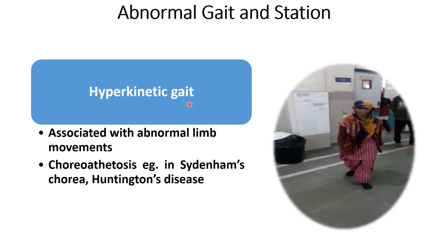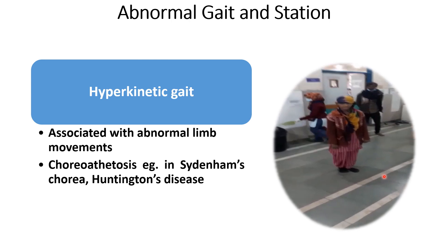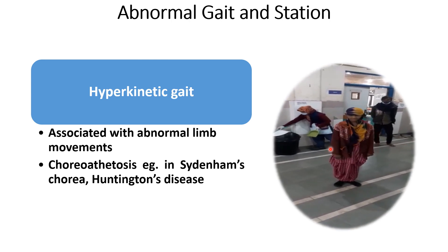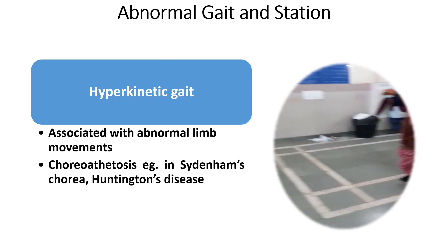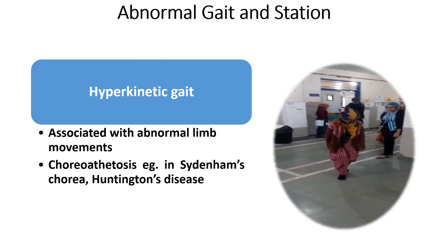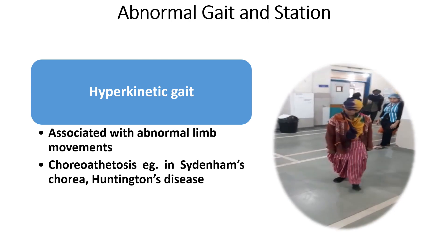Hyperkinetic gait is seen whenever the child has abnormal limb movements — either chorea, athetosis, or dystonia. The child has choreic movements in the limbs and abnormal body movements. This child was suffering from Sydenham chorea and had hyperkinetic gait. It can also be seen in Huntington's disease or any other disease with abnormal limb movements.